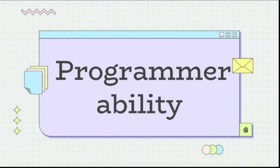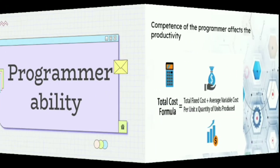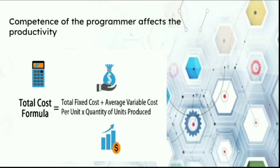Programmer Ability: The general competence of the programmer affects productivity and hence the cost of a software product. We have a formula: Total Cost equals Total Fixed Cost plus Average Variable Cost per Unit into Quantity of Units Produced.